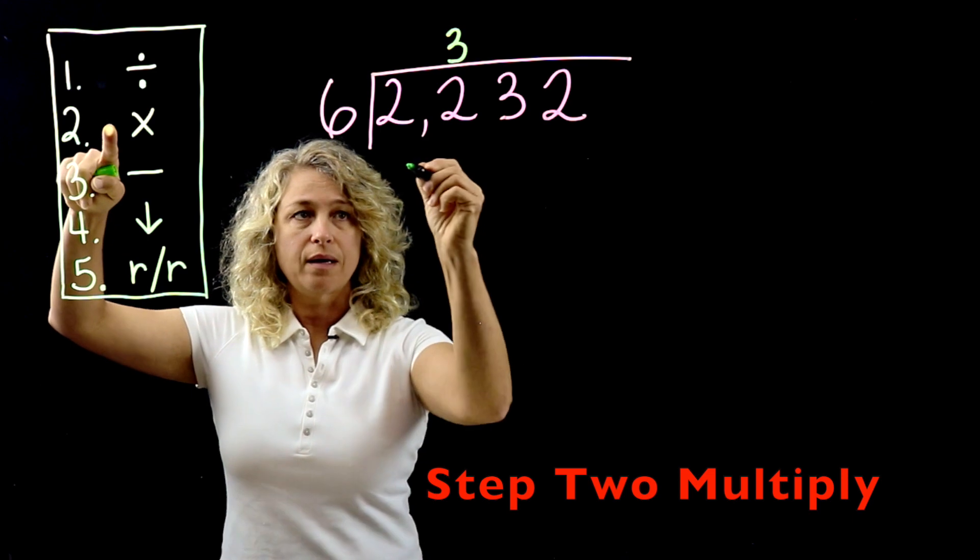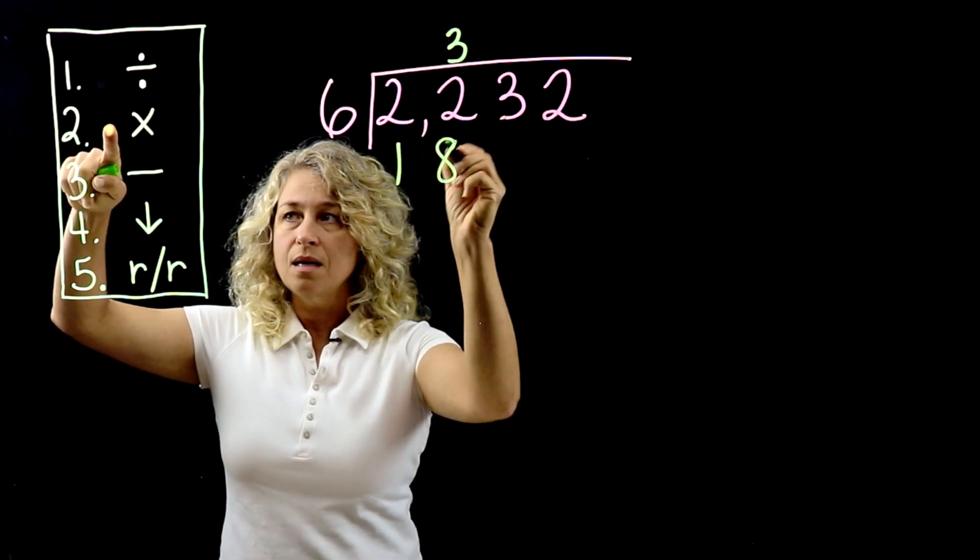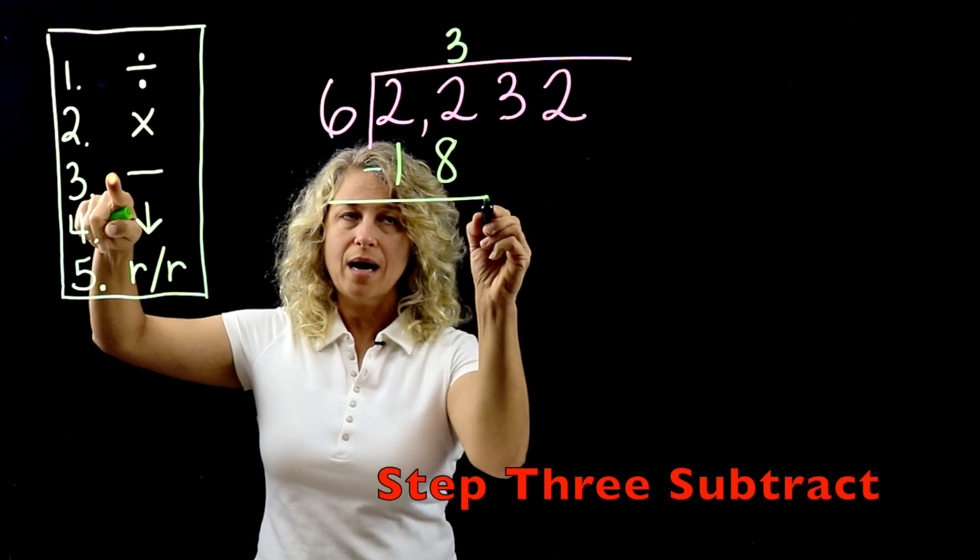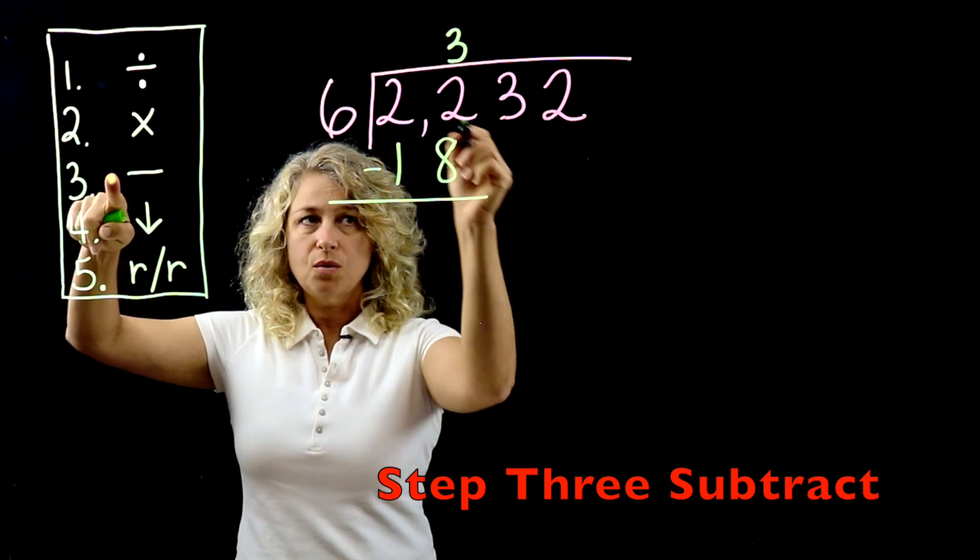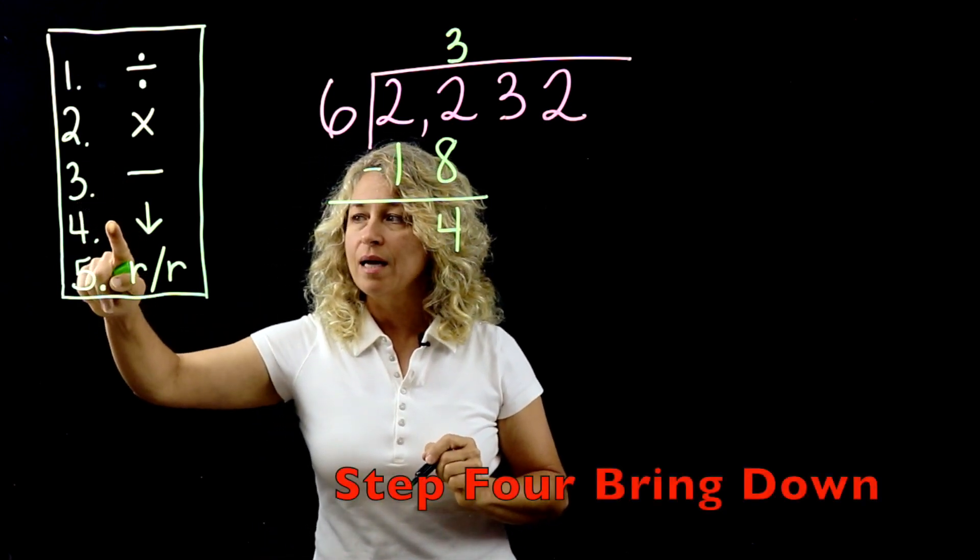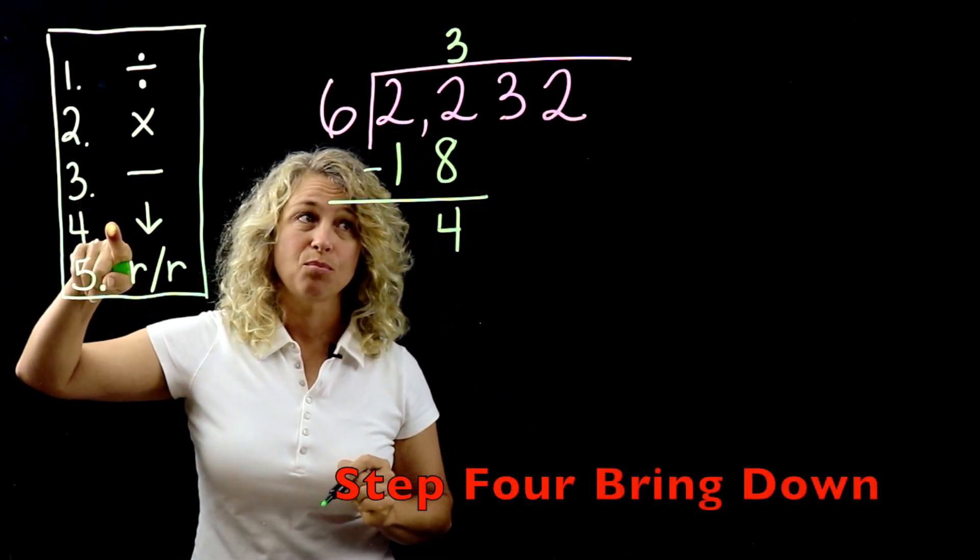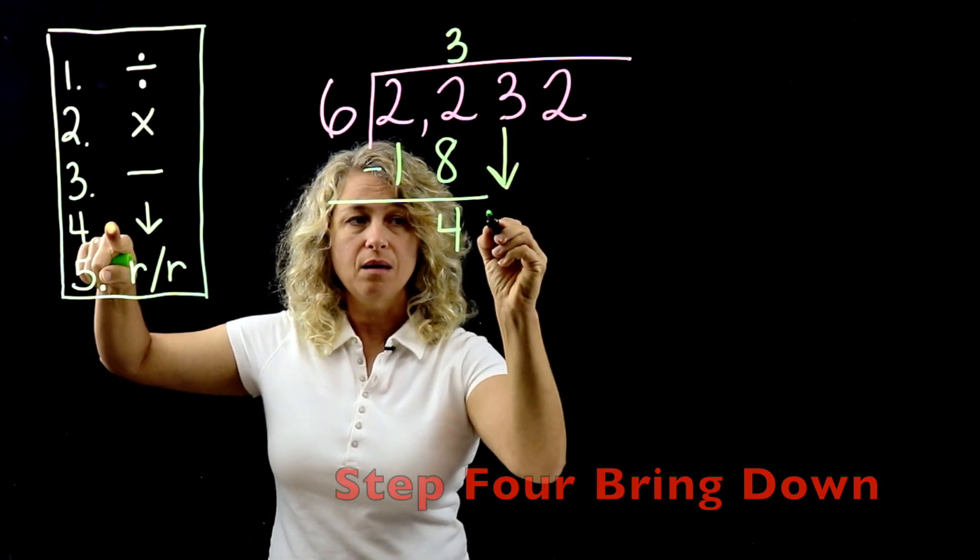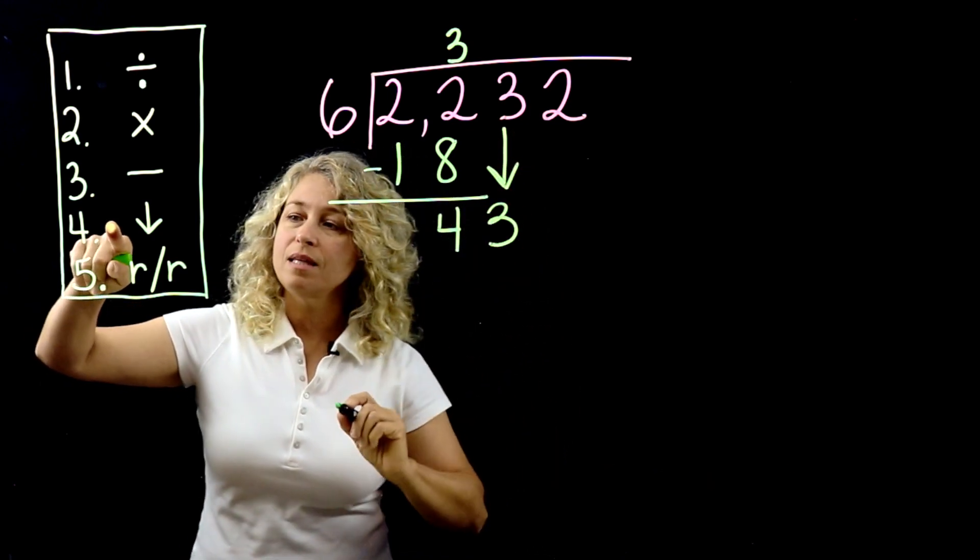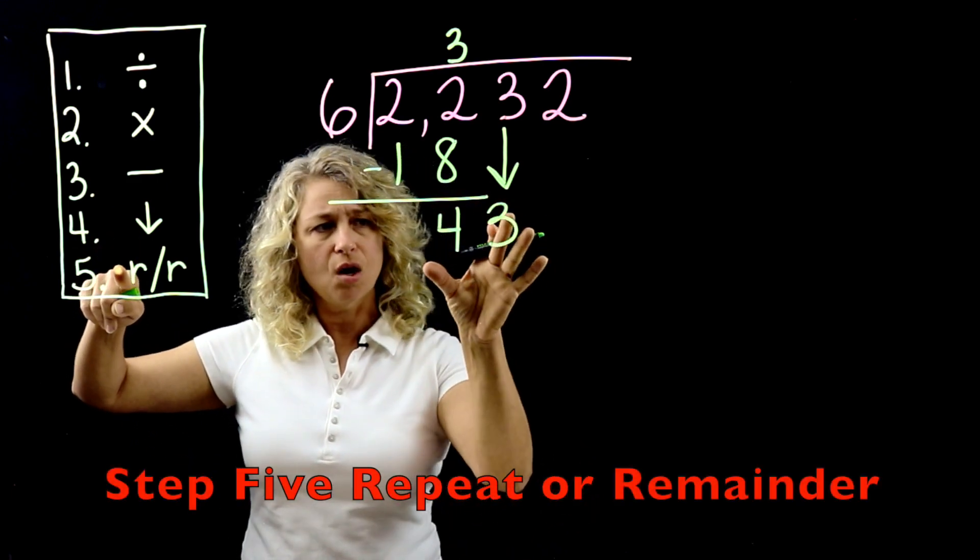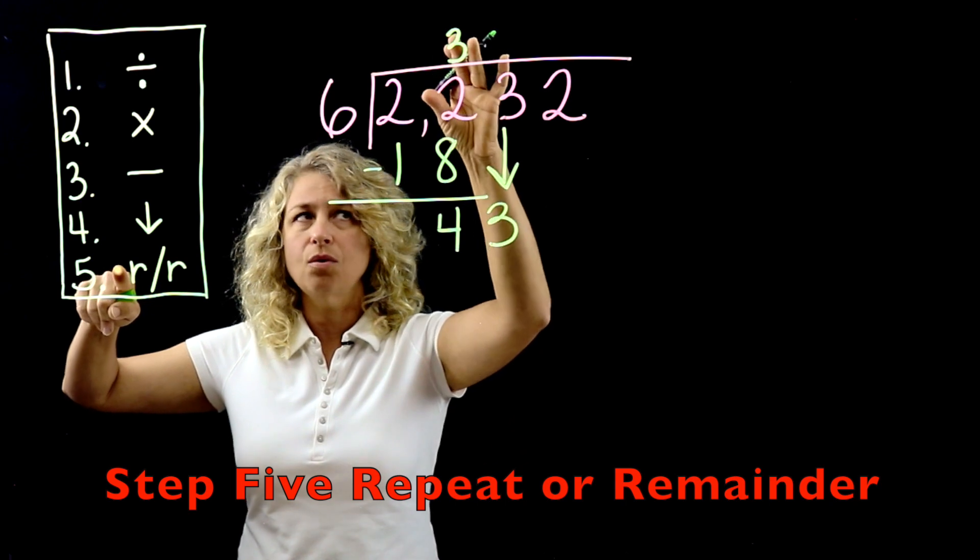All right, so step 2, multiply. 6 times 3 is 18. Step 3 is subtract, so we're going to subtract these two numbers, and 22 minus 18 is 4. All right, the next step is bring down the next number. We'll bring down 3.